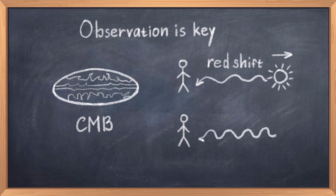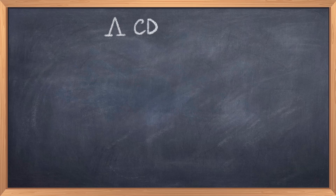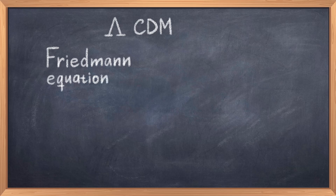The fact that the universe was expanding was first understood in the 1920s, but only in recent times did we realize that the universe is expanding at an increasing rate. This led to a Nobel Prize in 2011. These discoveries have helped scientists improve our understanding of the universe, and led us to the lambda CDM model, which is mathematically based on the Friedmann equations.